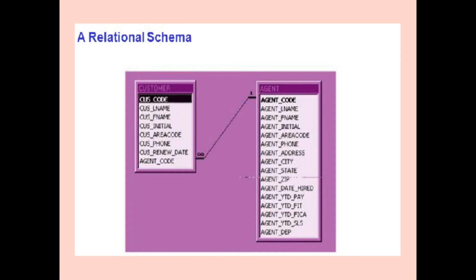And cardinality — the number of rows, meaning the number of tuples in the relation, is called its cardinality. Suppose there are ten records in the table, so the cardinality of the relation is ten. These are the key concepts to grasp the relational model.